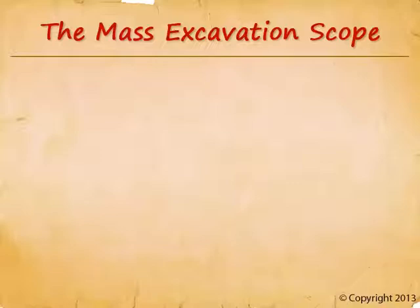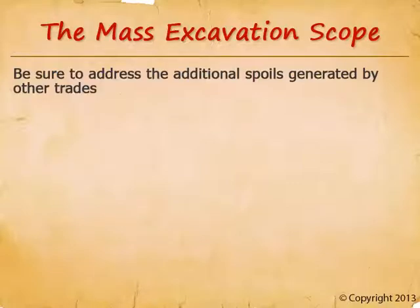Now we'll move into a discussion on the mass excavation trade. With mass excavation, there are comparatively fewer change order requests, but these are regularly very expensive. The most common and most preventable change order issues with regard to this trade involve additional spoils. The following examples are also commonly missed in the bid instructions, and when they are, the off-haul is paid for from the general contractor's contingency. Tapping into contingency is always a painful experience, especially for issues like these that are highly preventable.